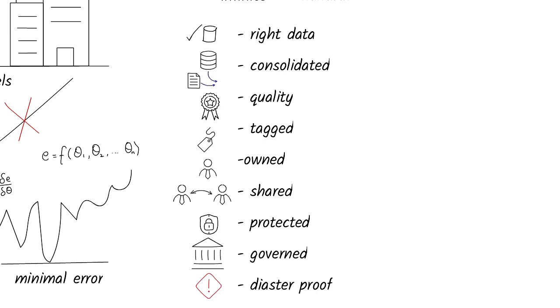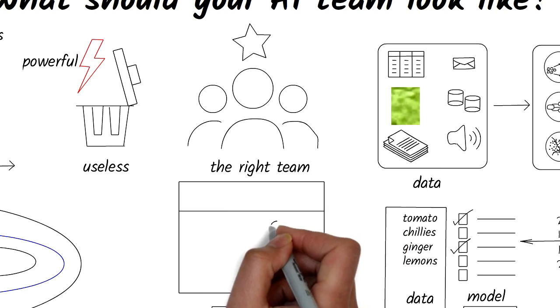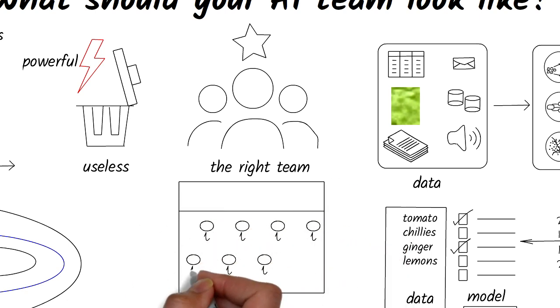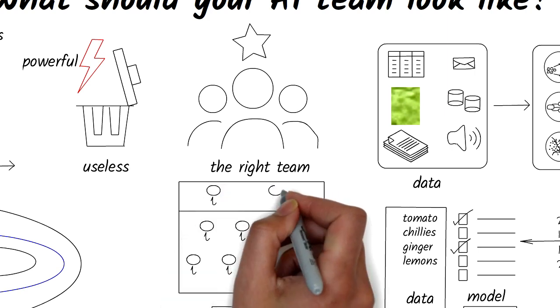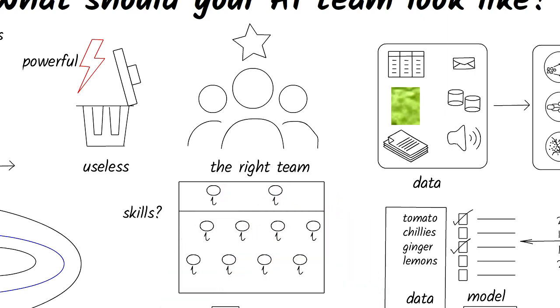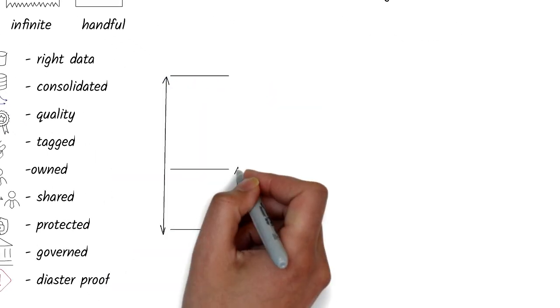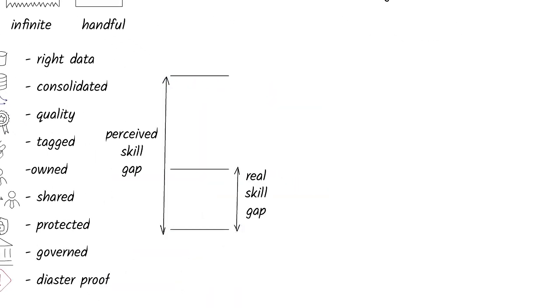If that's the case, build teams that understand data and can use machine learning models. You don't need to hire machine learning scientists who research and build new types of models. We can leave those skills to the Googles and Ubers of the world. Yes, there is a talent gap in this space, but some of this is perceived and overblown, because everyone wants to hire people who have deep knowledge of deep learning—pardon the pun.